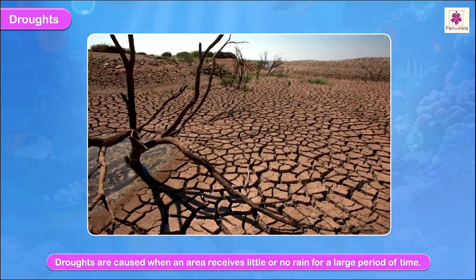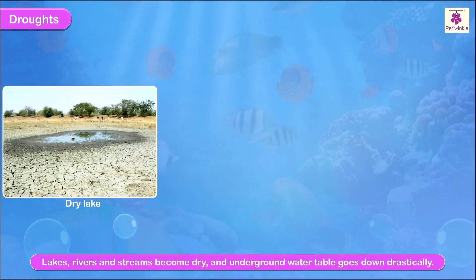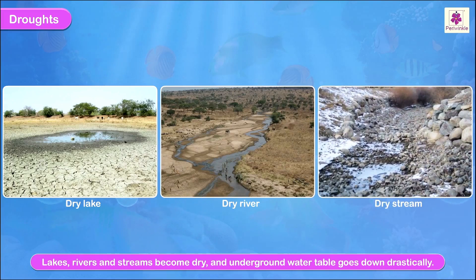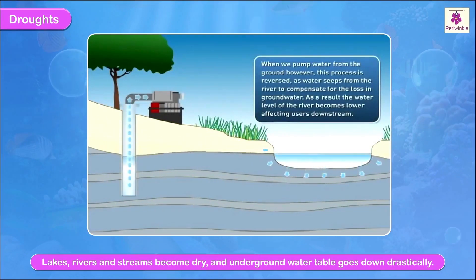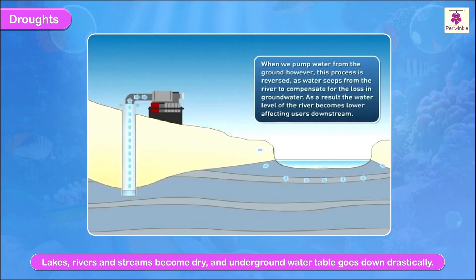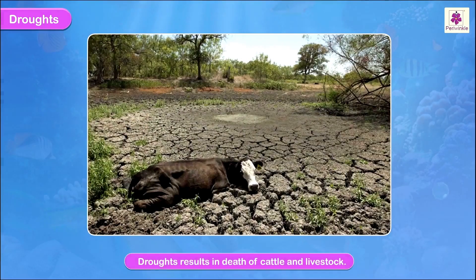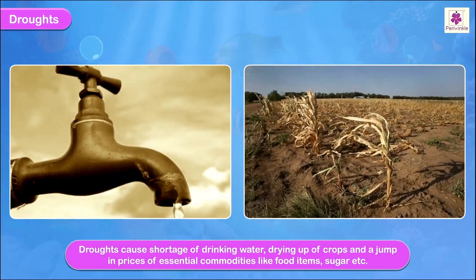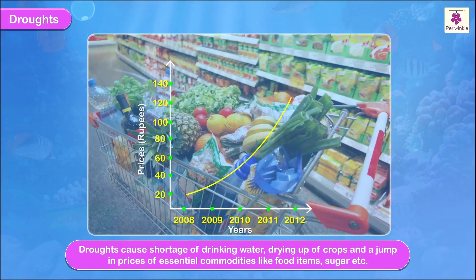Droughts are caused when an area receives little or no rain for a large period of time. In such places, the earth's surface gets parched and cracked, lakes, rivers, and streams become dry, and the underground water table goes down drastically. Droughts have the most adverse effect on farmers. They result in death of cattle and livestock, cause shortage of drinking water, drying up of crops, and a jump in prices of essential commodities like food items and sugar.